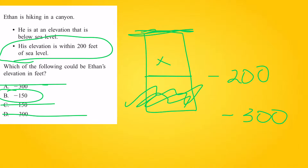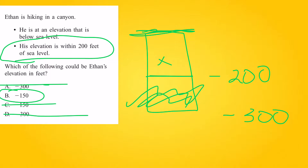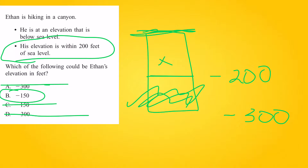I want to draw a little model to help me out with this one. Let me grab a pen here. The top of my column is sea level, and this is everything below sea level.